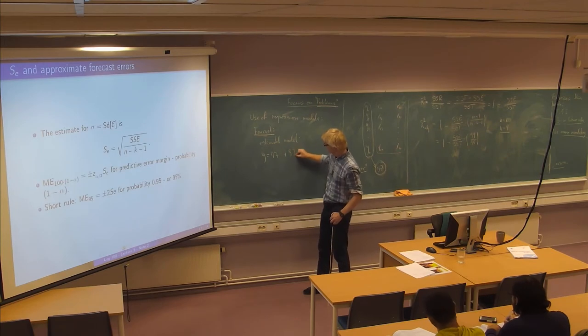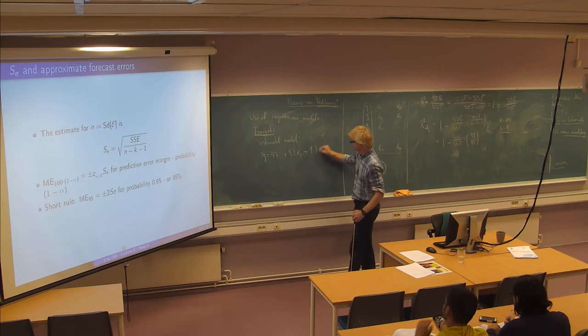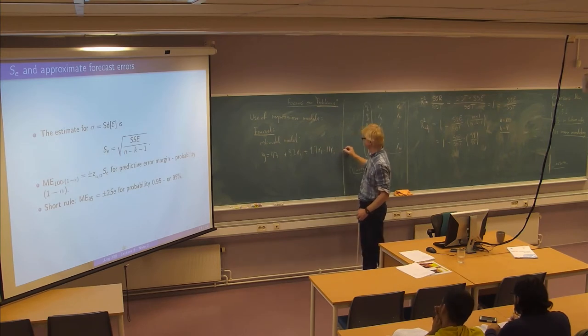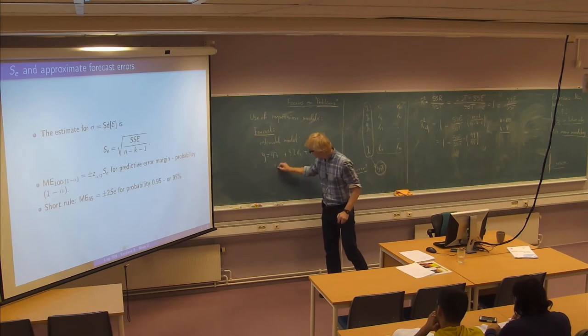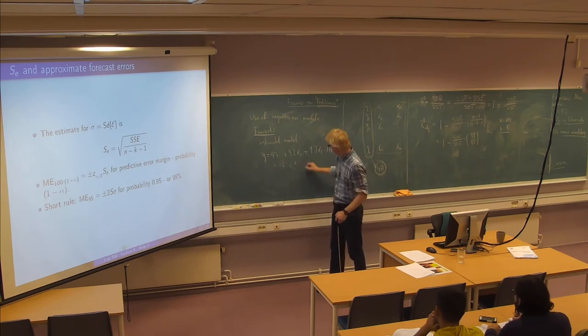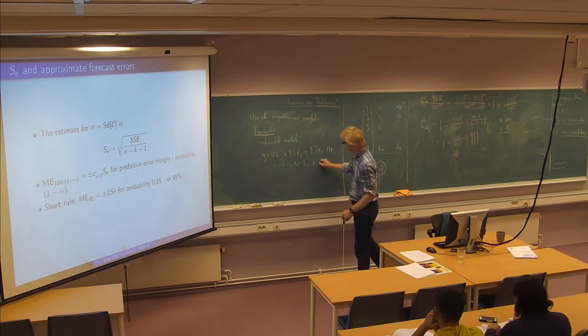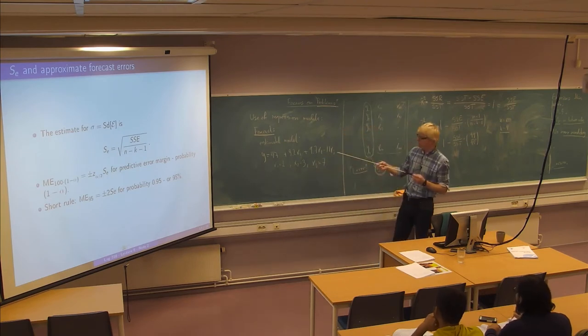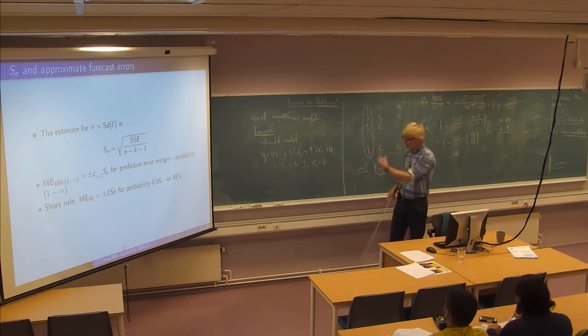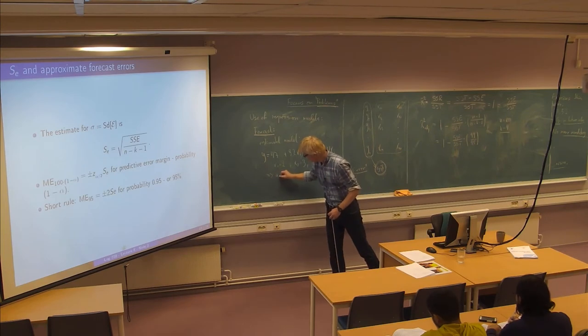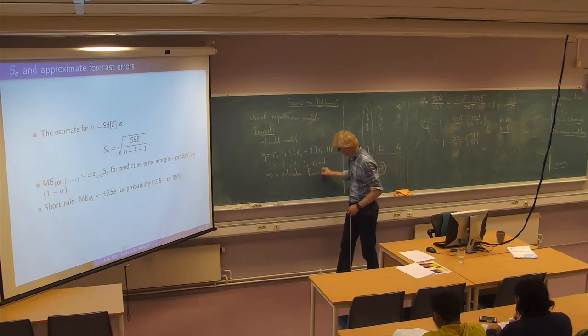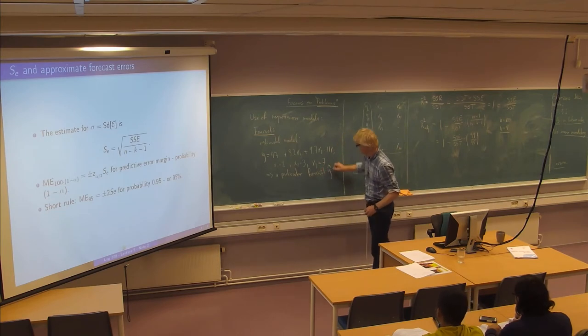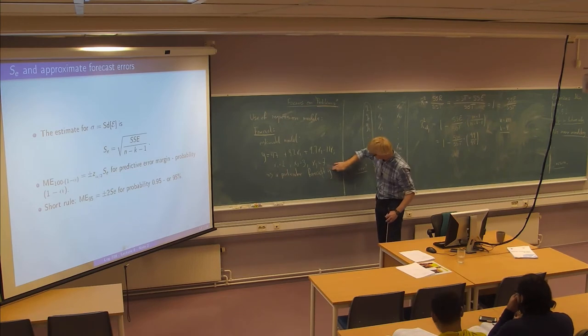So your estimated model will always look something like this, 47 plus 3.2 x1 plus 9.7 times x2 minus 1.1 times x3. So this is your particular estimated model and x1 is 2, x2 is 3 and x3 is 7. So then you can just insert these x values into the model and you get some forecasts given these x values. Which we call y hat, typically. Or y star maybe.